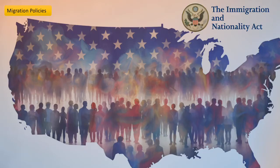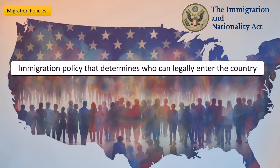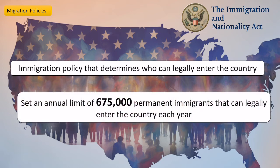Why these immigration patterns are allowed to happen is largely down to migration policies. These are set out in the Immigration and Nationality Act, which determines who can legally enter the country — this doesn't account for people who enter illegally. They set a limit of 675,000 permanent immigrants that can legally enter each year, split up into different categories.